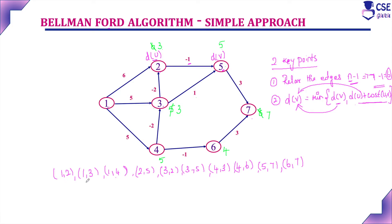Second relaxation, considering edges in the same order. 1 to 2: direct distance 6, but through vertex 3 it is 3. 1 to 3 is 5, but already 3. 1 to 4 is 5. For 2 to 5: vertex 2 distance is now 3, so 3 minus 1 equals 2; minimum between 2 and 5 is 2, so we update vertex 5 to 2. For 3 to 2: 3 minus 2 equals 1, which is minimum. Consider 1 for vertex 2.